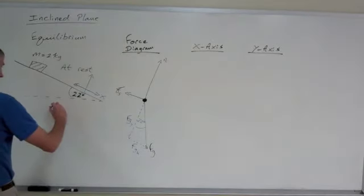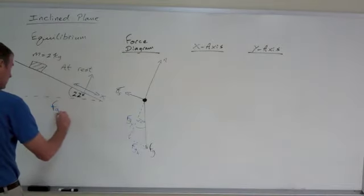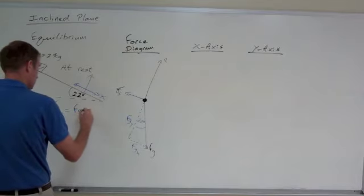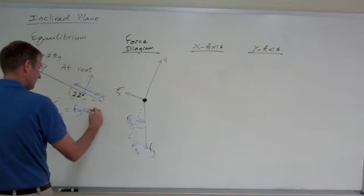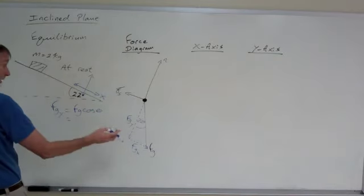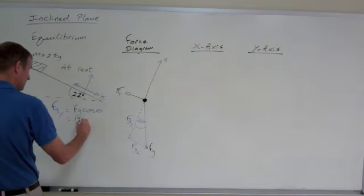Now I'm going to go off to the side and calculate those. FGY will be FG times the cosine, not sine, but cosine of the angle. So that is FG, which is 2 times 9.8 is 19.6.